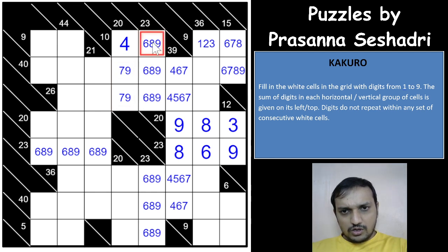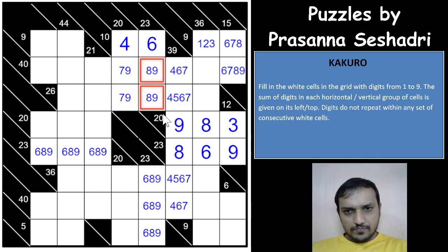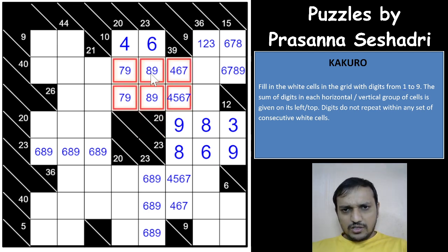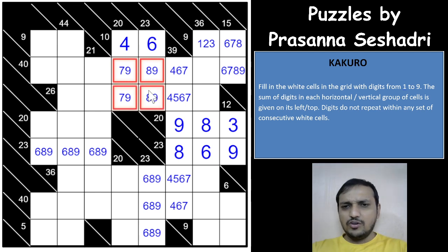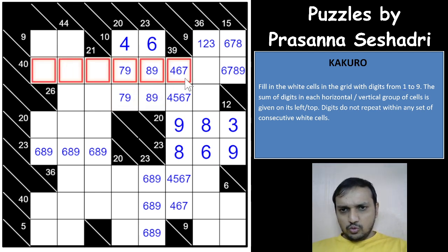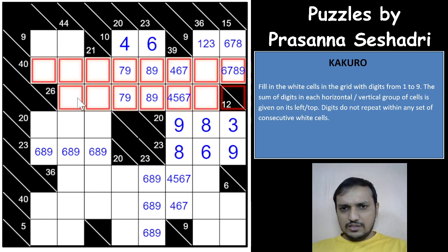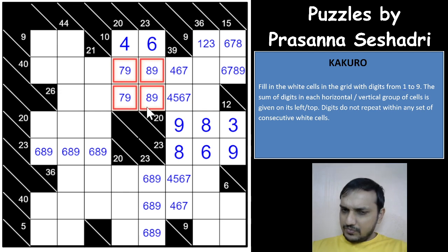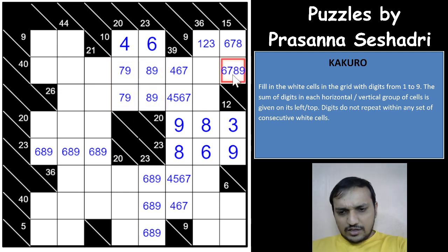This 4 gives a 6 here with 8 and 9 in any order. Now whatever the case, one 9 would be in one of these two cells and another 9 in one of these two cells — forming an X-wing of 9 across these two columns. This eliminates 9 from this cell.